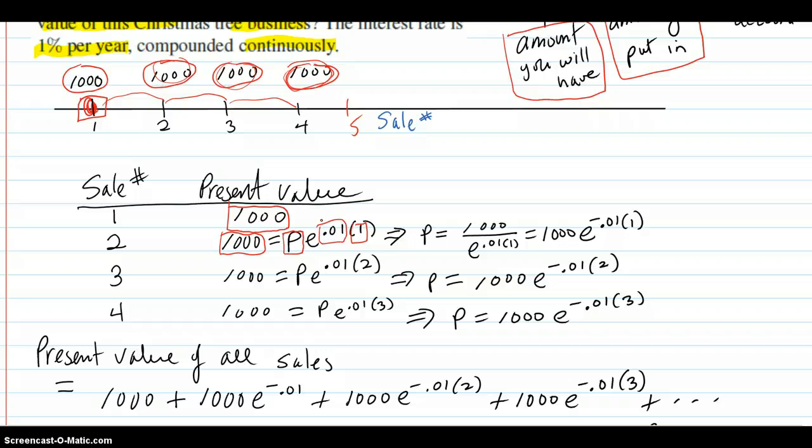So all you have to do is solve for P by dividing the e to the 0.01 over to the other side, which is here now. And then you can rewrite that with a negative exponent, and you have here. I left the one here because I want to see the pattern.